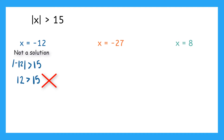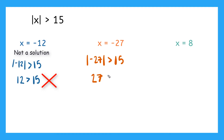Is negative 27 a solution to the inequality? We find that out by plugging in our new x value. We evaluate the absolute value of negative 27, which is positive 27 — a distance of 27 from zero. Is 27 greater than 15? It sure is. This is true, so negative 27 is a solution to the inequality.